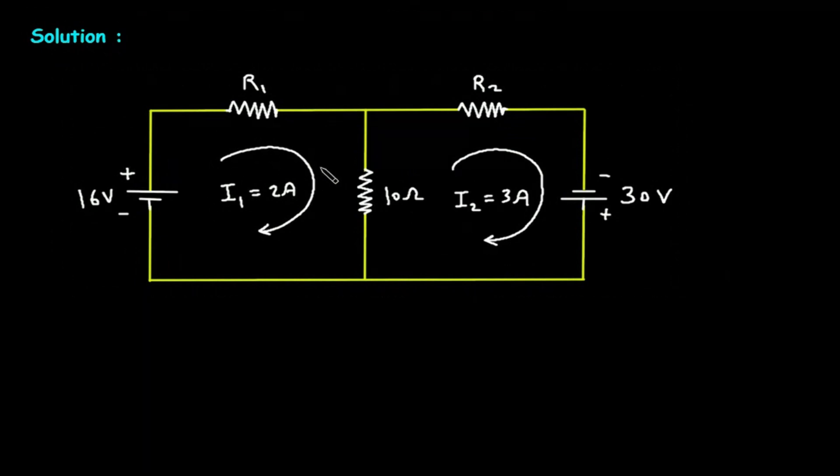Now here we can see this is mesh number 1 and this is mesh number 2. So according to the direction of this current, this will be positive, this will be negative. This will be positive and this will be negative, positive, negative, positive, negative.